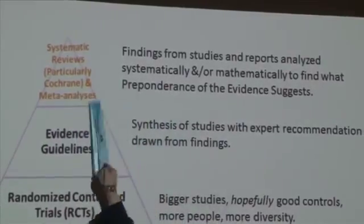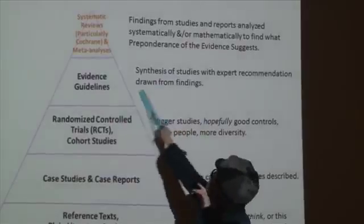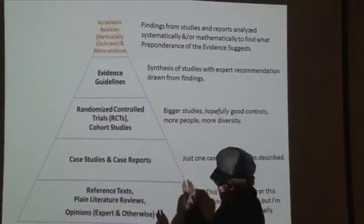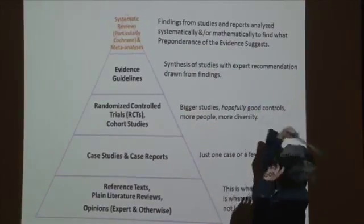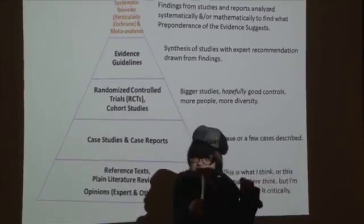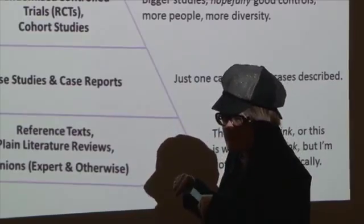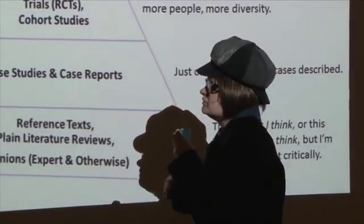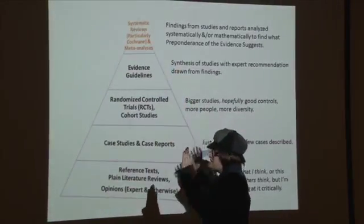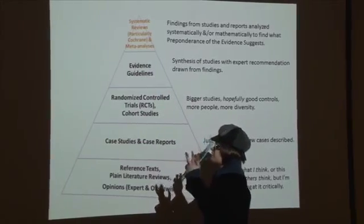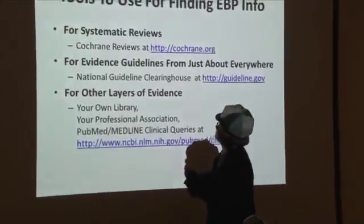At the top in gold are systematic reviews — particularly the Cochrane variety — and meta-analyses. What these do is take findings from studies and reports lower on the pyramid and analyze them systematically and/or mathematically to find what the preponderance of the evidence suggests. Evidence always 'suggests' because nothing is ever proven — there are new treatments, new findings, and old treatments that come back into popularity. Systematic reviews and meta-analyses combine the information from these other sources to find what the preponderance indicates.